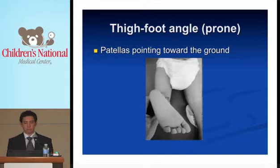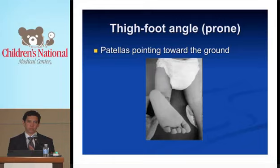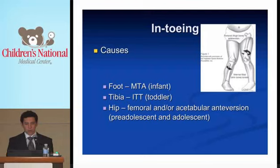This is a picture of a patient prone. The knee is flexed at 90 degrees and the patella is pointed downward. The angle made between the thigh and the foot as measured here is 40 degrees inward — 40 degrees of inward rotation. That is thought to be due to tibial torsion based on this exam.